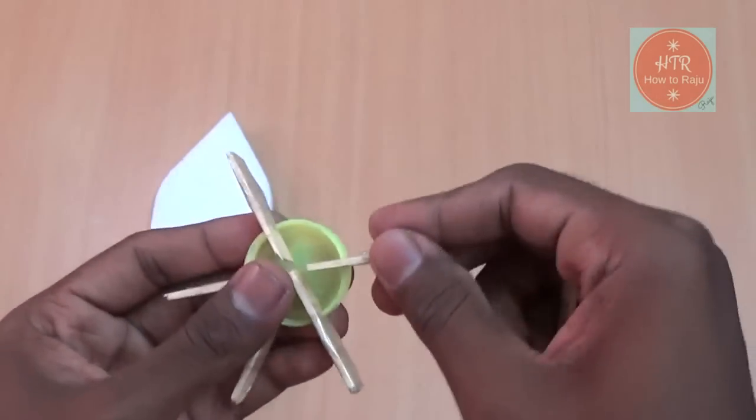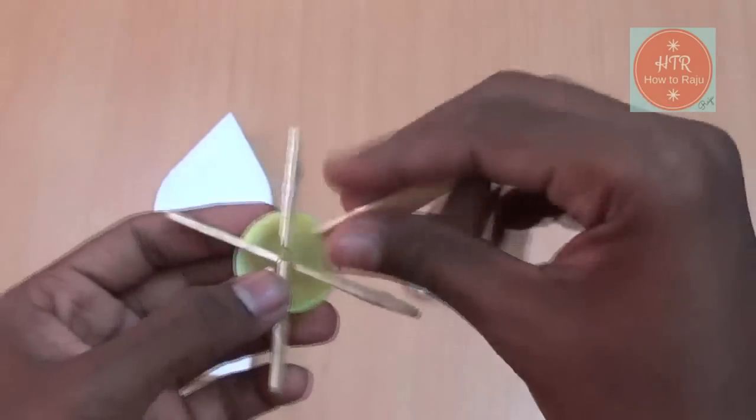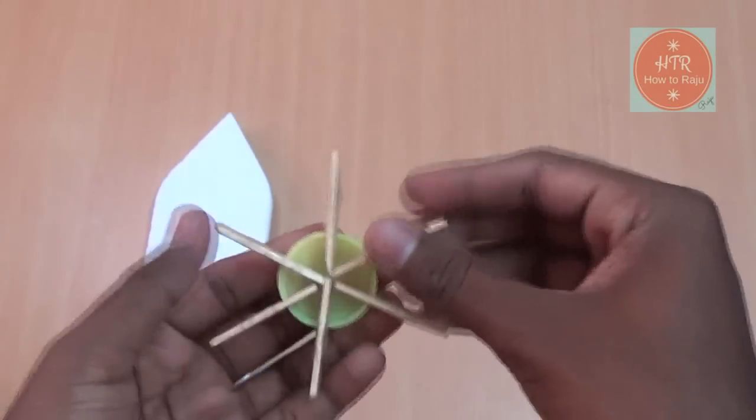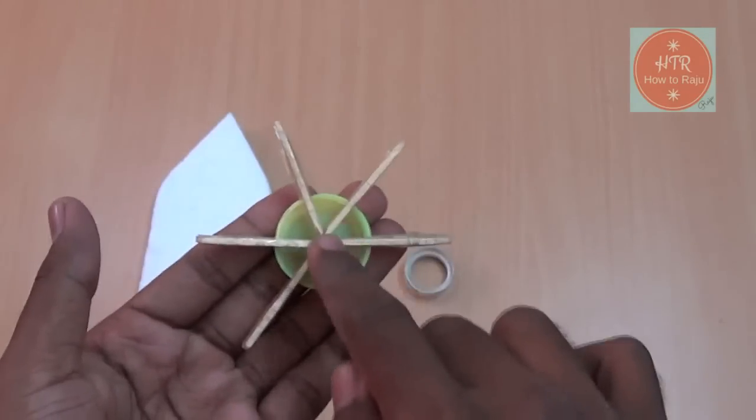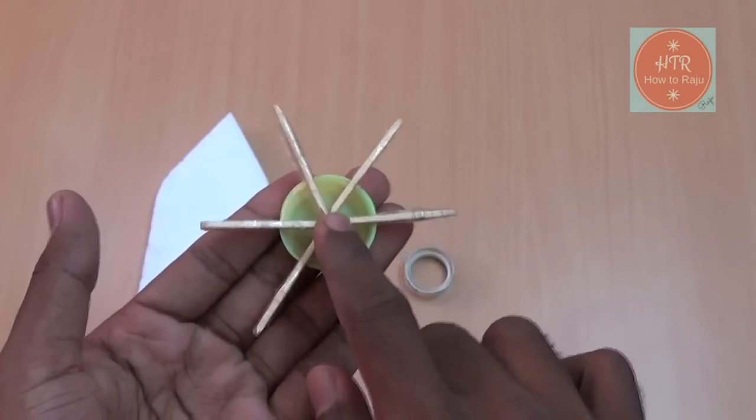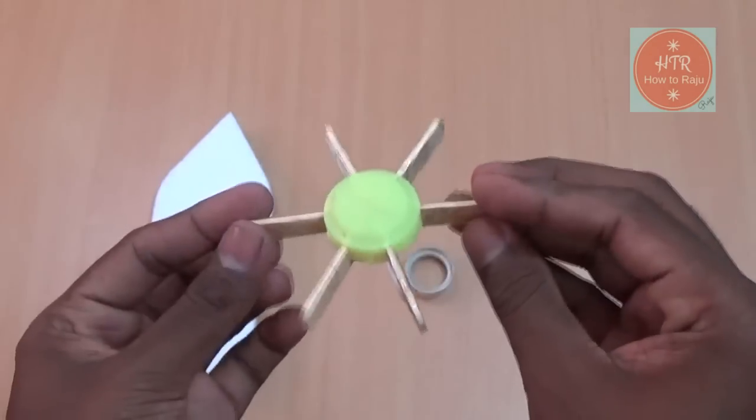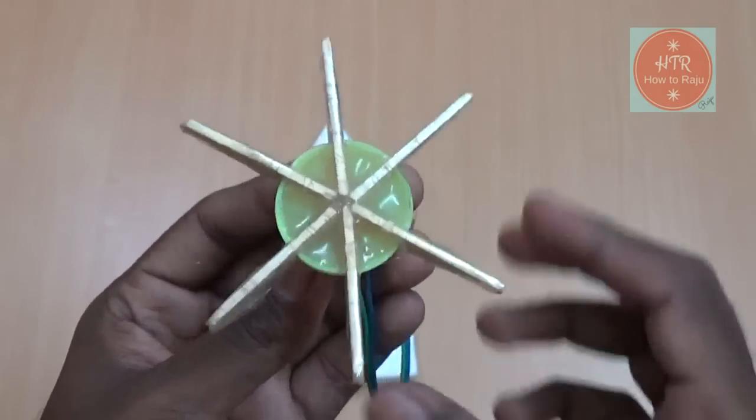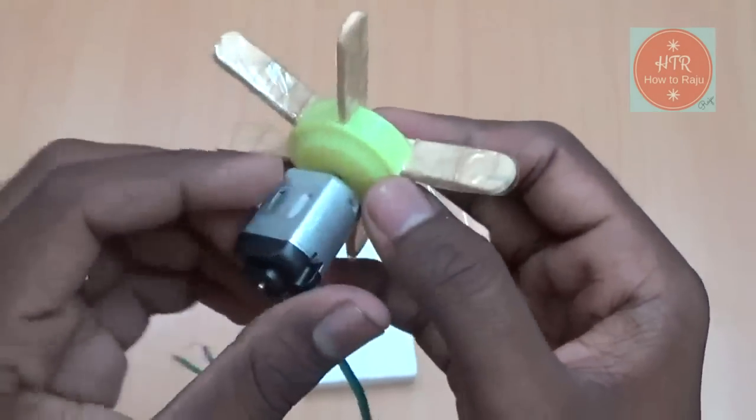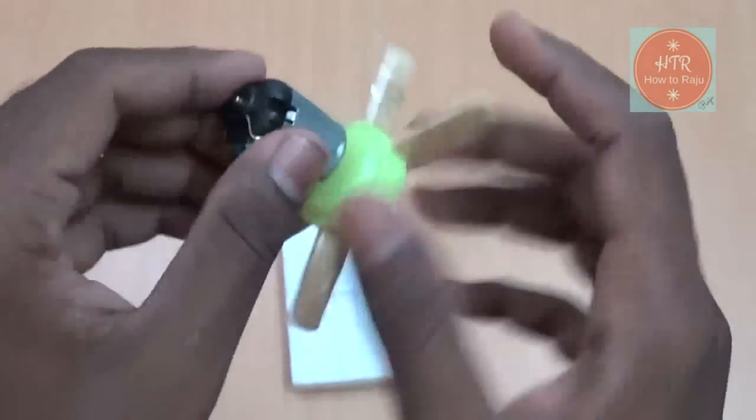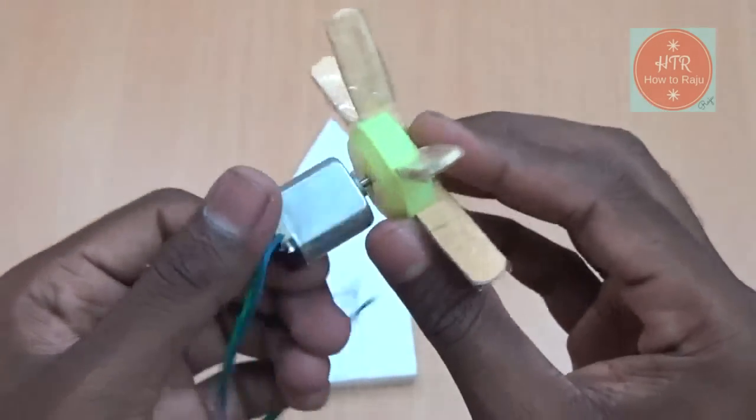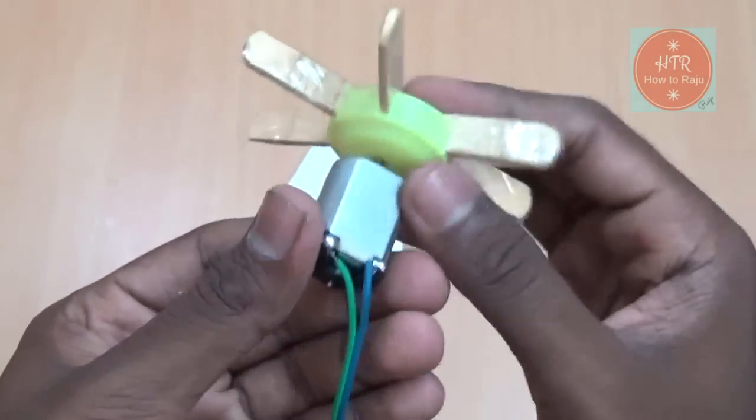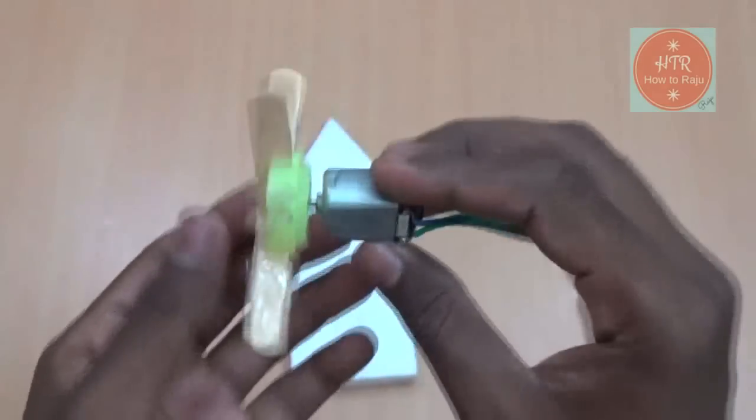Then finally stick it using the glue gun in the center of the bottle cap. It is the propeller of our boat. After sticking the propeller, make a hole in the center of the propeller, then insert the DC motor into it. Now the propeller is ready to use.